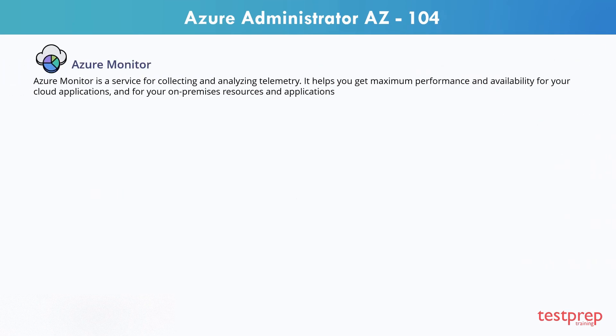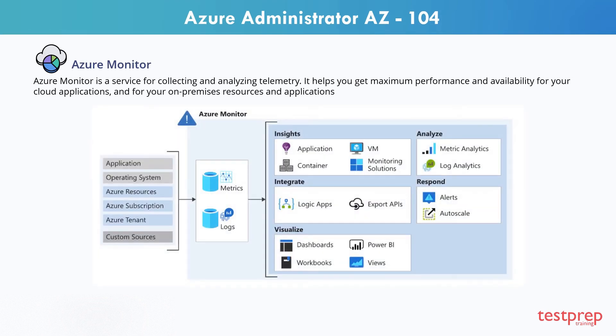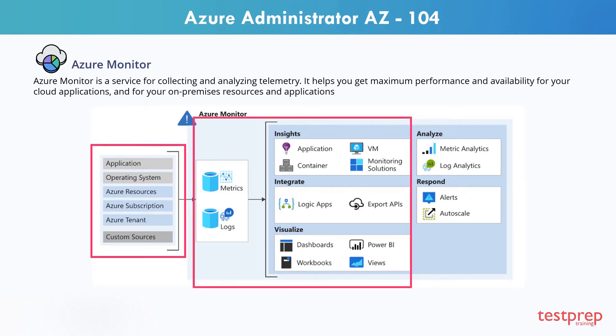Azure Monitor is a service for collecting and analyzing telemetry. It helps you get maximum performance and availability for your cloud applications and for your on-premises resources and applications. It shows how your applications are performing and identifies any issues with them. The diagram shown gives a high-level view of Azure Monitor: on the left are the sources of monitoring data, at the center are the data stores for metrics and logs, and on the right are the functions Azure Monitor performs, such as analysis, alerting, and streaming to external systems.